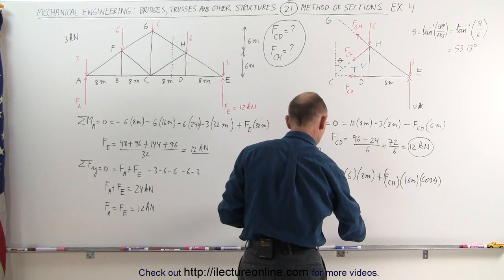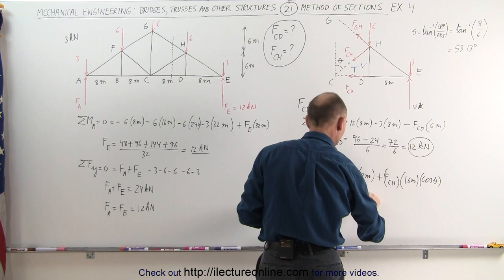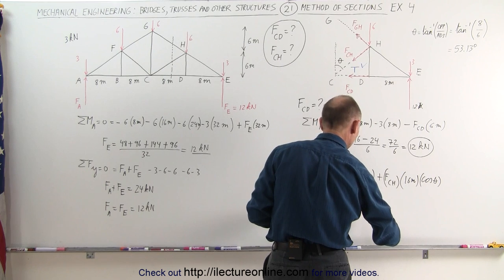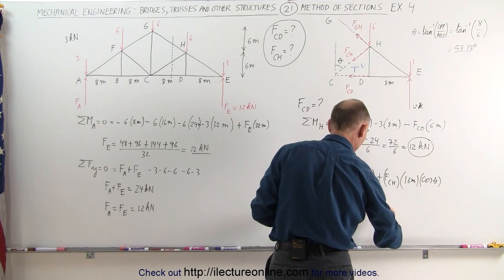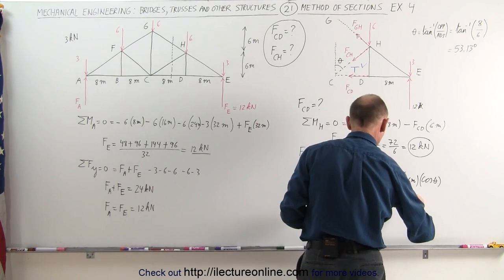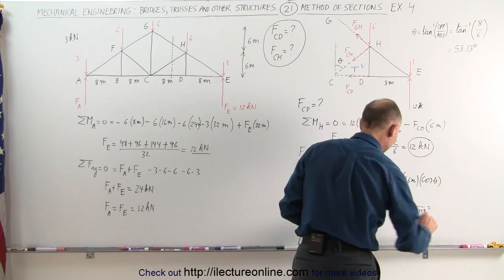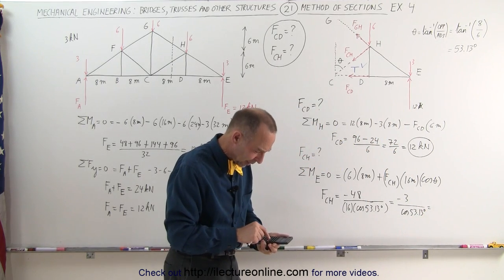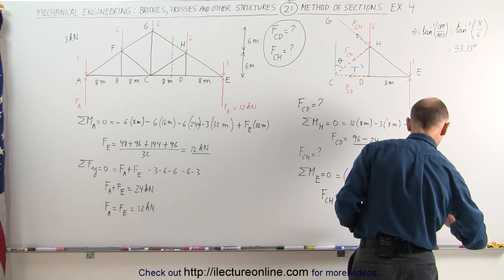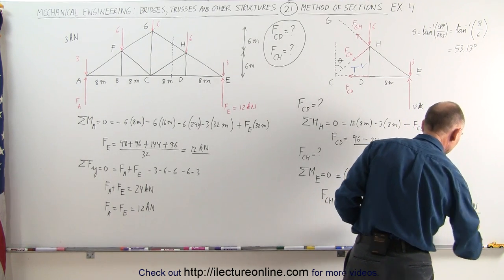So F_CH equals negative 48 divided by (16 times cosine of 53.13°). That simplifies to negative 3 divided by cosine(53.13°). Cosine of 53.13° is 0.6, so F_CH equals negative 3 divided by 0.6, which equals negative 5 kilonewtons.